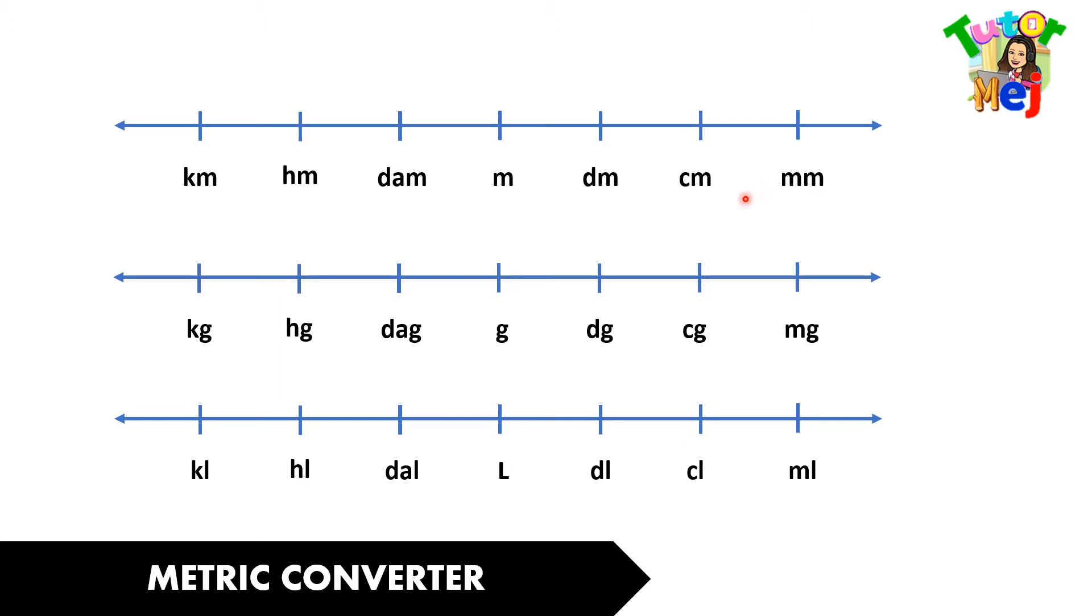Now, we have the different metric converters. The first one is for length, the second is for weight, and the third is for capacity. To understand this, let's have an illustration.